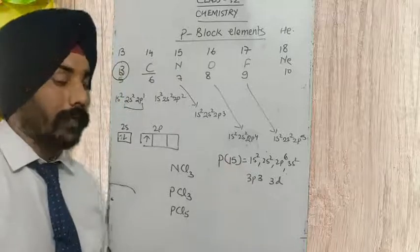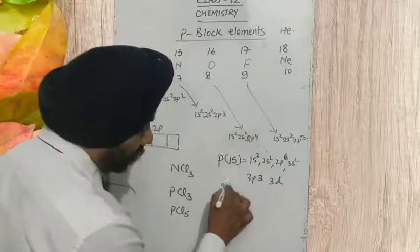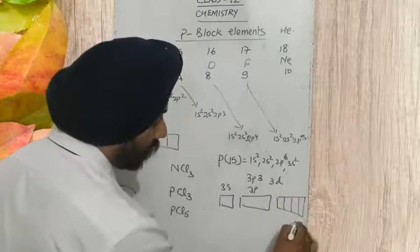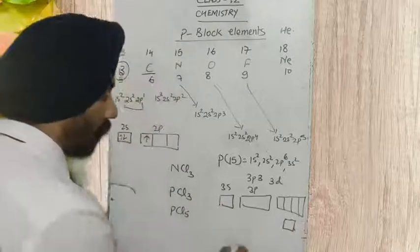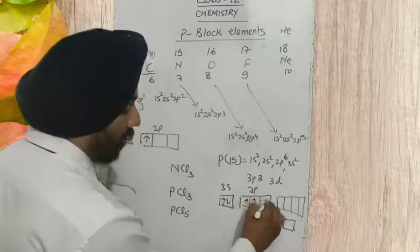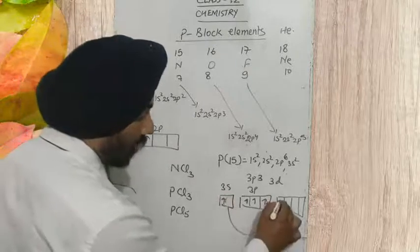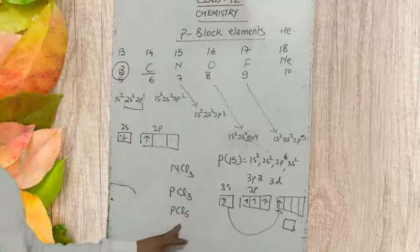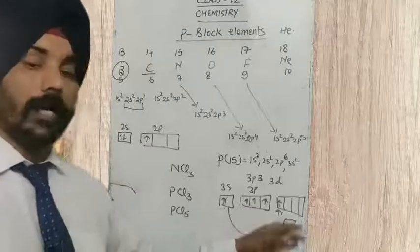The 3d is having 5 orbitals. So 3s², 3p³ — one electron can be promoted to the d orbital. So there could be a maximum covalency of up to 5. It can make PCl₅. It can accept one electron each from five chlorine atoms, and five chlorine atoms can be joined to phosphorus.